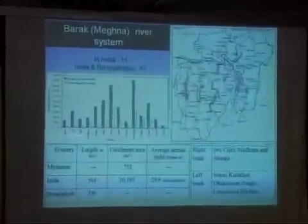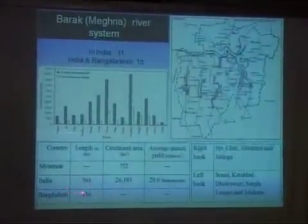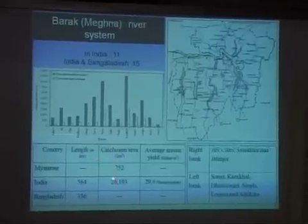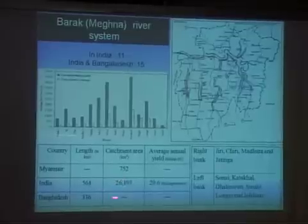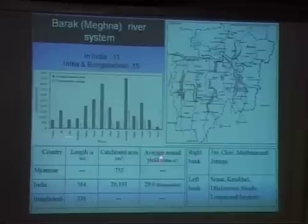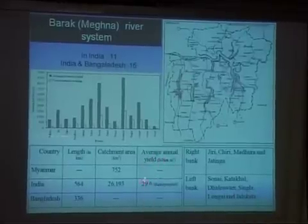The other branch — the Brahmaputra-Barak system — is actually Meghna. Barak is also known as Surama in Assam, and then it becomes Meghna. This is also a very interesting river. Not as much ferocity, but it also changed courses — it's more of a meandering kind, like the southern tributaries. In India, we have about 564 kilometers; in Bangladesh, about 336 kilometers. Catchment area also lies in Myanmar. In India we have a large catchment of 26,000 square kilometers, and roughly about 29.6% of the annual yield in terms of billion cubic meters is in India.